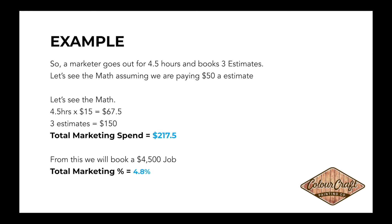Let's do another example. A marketer goes out for four and a half hours and books three estimates. Assuming we're paying $50 per estimate: four and a half hours times $15 an hour gives $67.50 as base pay, plus $150 for the three estimates. The total marketing spend — how much the marketer earned for the session — was $217.50 in four and a half hours.